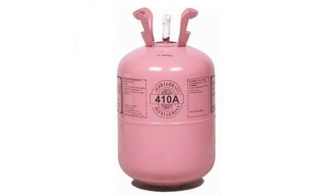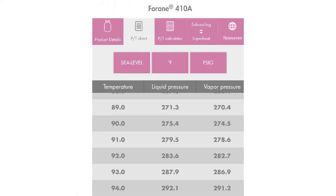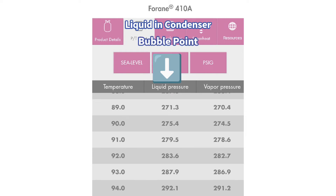Now let's move to R410A, which is also a blend. When you look at the PT chart for this refrigerant, you'll notice that those pressures are just a little bit off for any given saturation temperature. That means that the refrigerant will act just a little bit differently in the evaporator than it will in the condenser. You're going to want to use the liquid column in the condenser — what is the state of your refrigerant supposed to be when it leaves the condenser? It's supposed to be a liquid, so use the liquid column. Some PT charts, instead of using the term liquid column, are going to use the term bubble point. This is the same thing, so a good way to remember that is 'bub' for subcooling.